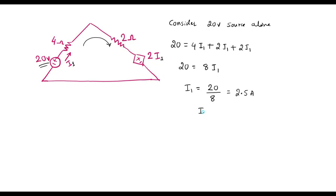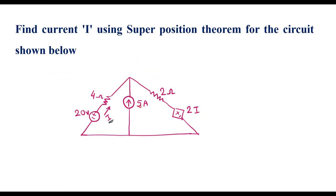I1 is the current which flows into the circuit considering the 20 volt source alone. Now in the original circuit, let me consider the 5 amp source alone. In that case, the 20 volt source should be made equal to zero by short circuiting the voltage source.